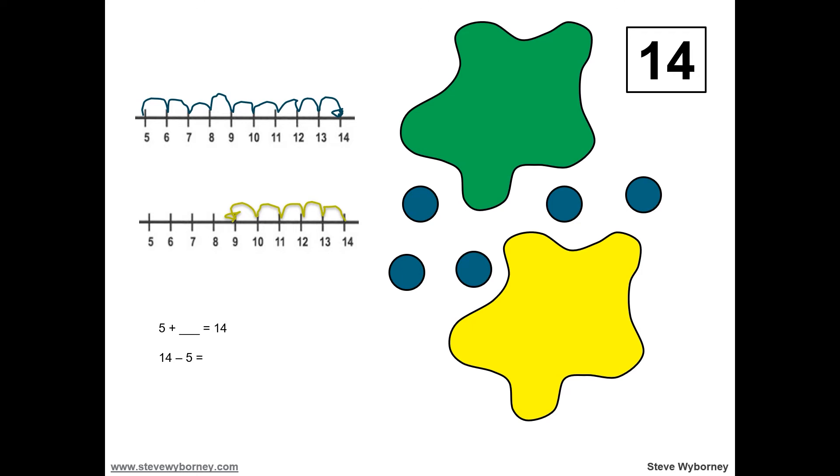Some strategies we could have used is counting from five to 14: six, seven, eight, nine, 10, 11, 12, 13, 14. We would have counted nine times. Or we could have counted down from 14 five times to get to nine. You could have also used addition: five plus what equals 14? Or subtraction: 14 minus five equals nine.